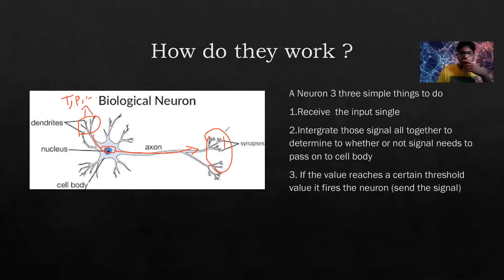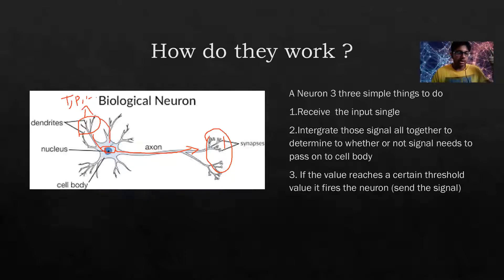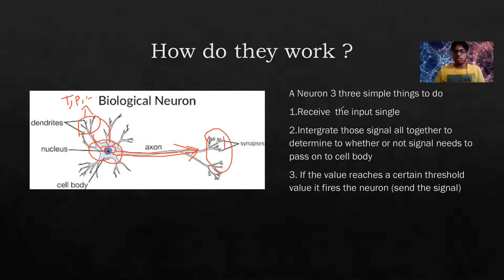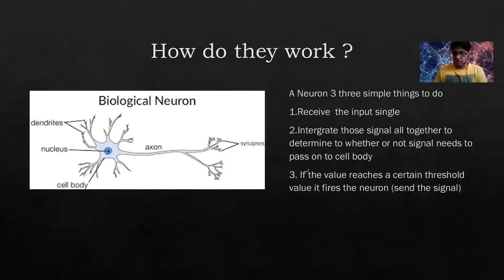So those are the three things a biological neuron does: receive signals via dendrites, pass them to the cell body or nucleus, and if the signal reaches a certain threshold, send those signals through the synapses to the next neuron to perform a task.